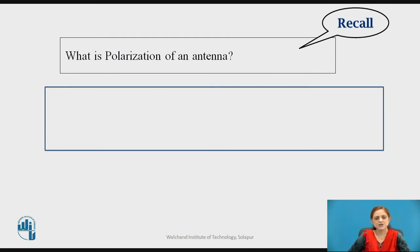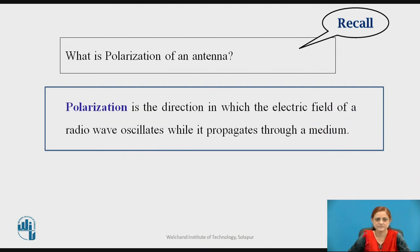Before starting Babinet's Principle, you can pause the video here and recall the meaning of polarization of an antenna. Polarization is the direction in which the electric field of a radio wave oscillates while it propagates through a medium. When an electromagnetic wave passes through any medium, the direction and amount of signal radiated is decided by this polarization.